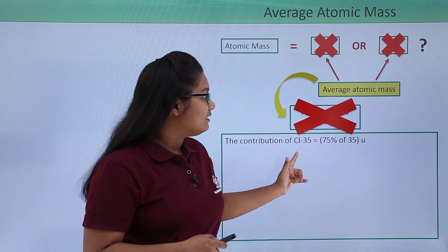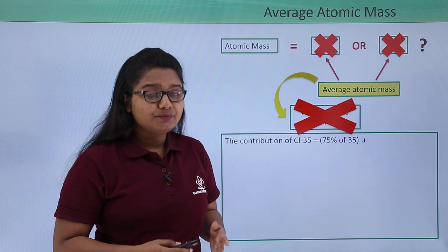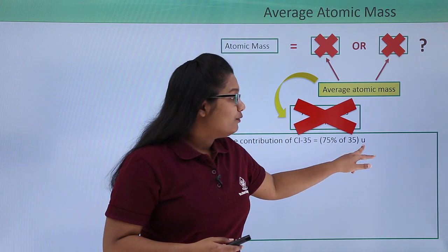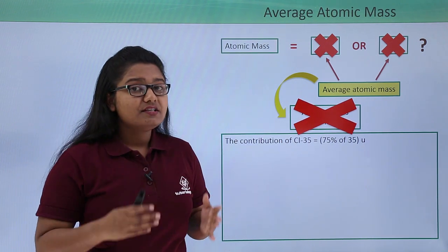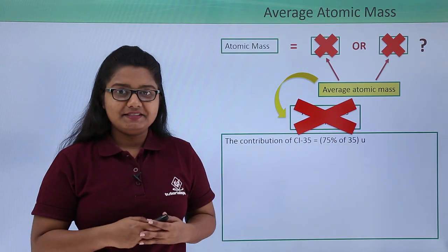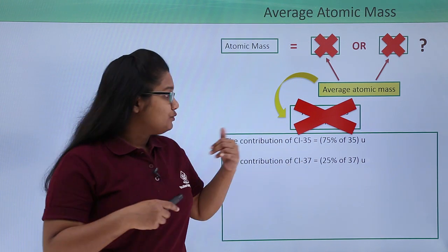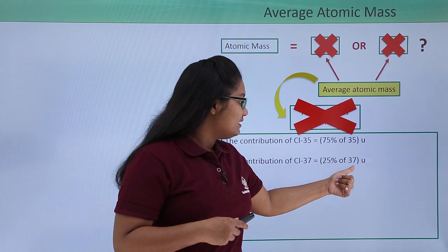So the contribution of chlorine-35 is 75 percent of 35 u. Here u denotes the unit of atomic mass which is called the unified mass. Now the contribution of chlorine-37 is 25 percent of 37.